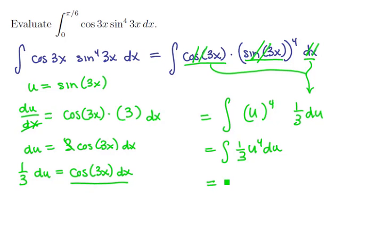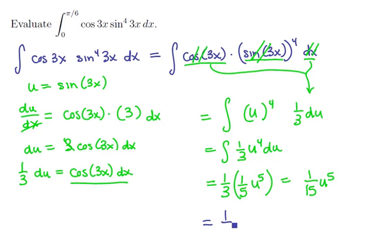Since this is a power function, the 1/3 will come along for the ride. We'll raise the power by 1 to get 5, and divide by the new power, giving us (1/15) u to the fifth. Back-substituting, we get (1/15) times the sine of 3x raised to the fifth power, plus a constant — and we have every possible antiderivative.